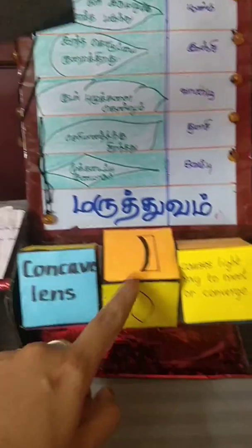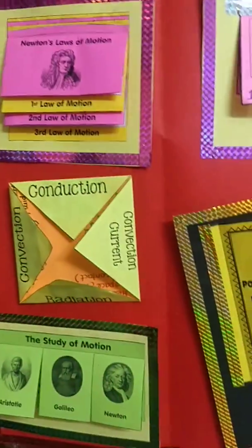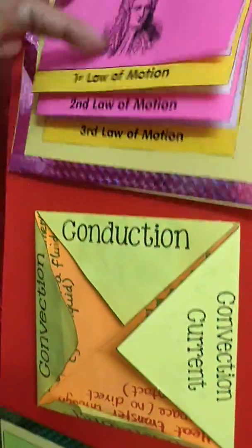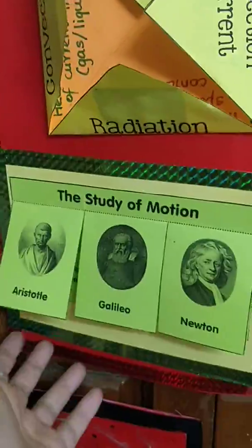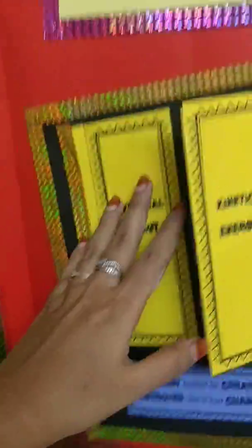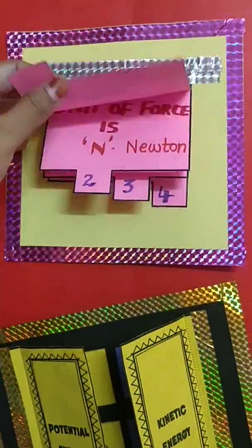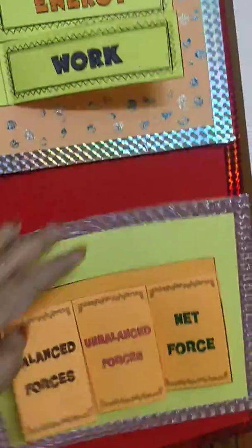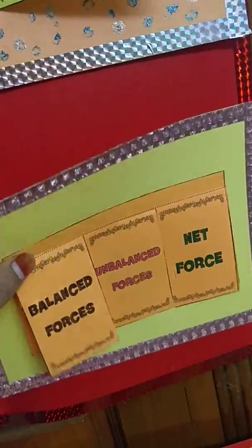You can rotate it like this. There are a few more booklets here, and this is more like an interactive wall covering Newton's law of motion, conduction, convection, study of motion, potential energy and kinetic energy definitions with examples, fun facts about force, physics vocabularies, and balanced and unbalanced force.